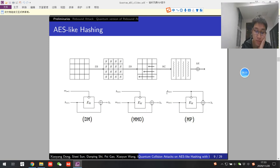AES-like hashing is built on AES-like block ciphers. The most popular way to build compression functions are DM, MMO, and MP constructions. In this paper, we focus on MMO and MP constructions.